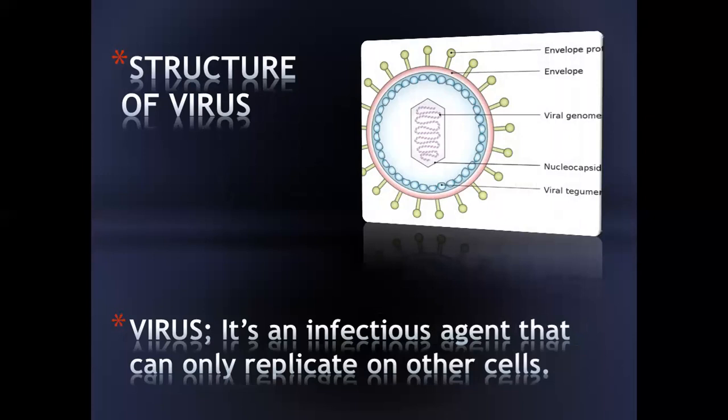Today we are going to talk about the structure of virus. First of all, we have to know what is a virus. A virus is an infectious agent that can only replicate in other cells, because it does not contain its own machinery for replication.